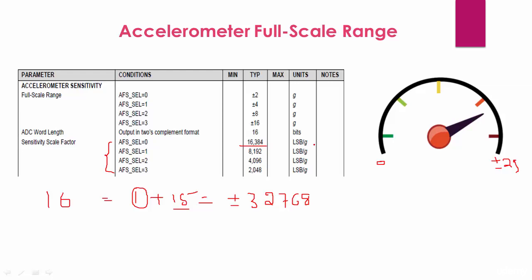then output will be 16,384. This is just a number for every g. That makes sense, isn't it? Because I have selected this range, so in this range it can go from zero to plus or minus 2g.